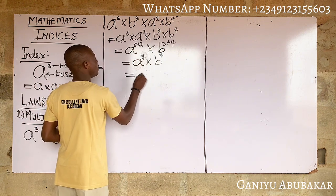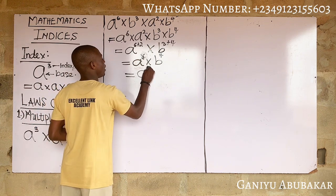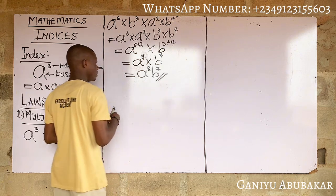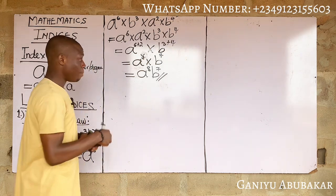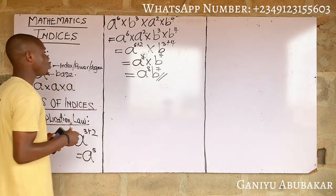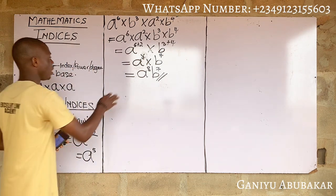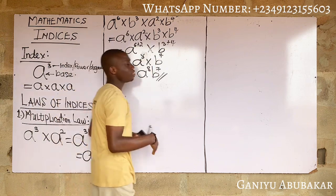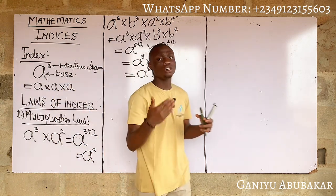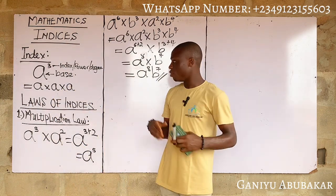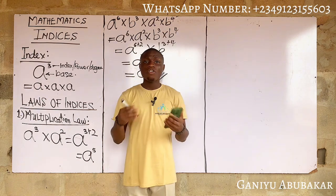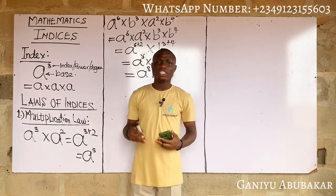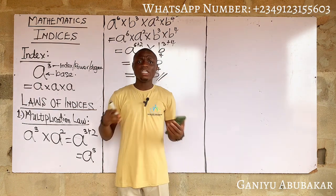This gives a⁸b⁷ as the answer to this particular problem. That's your idea behind the Multiplication Law of indices. Now let's look at the second law of indices called the Division Law.